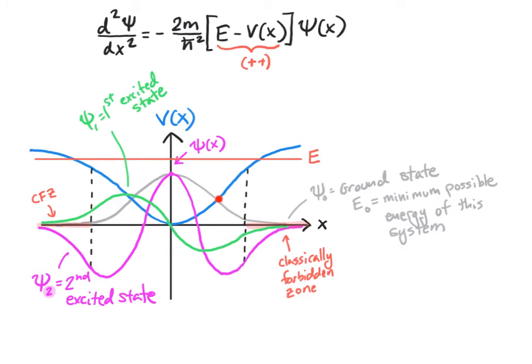Moreover, if the potential function is symmetric, then the ground state will be symmetric, and the second, fourth, sixth, and all even excited states will also be symmetric. The odd excited states — like the first — will be anti-symmetric; they flip from positive to negative. Another useful rule: in the classically allowed regions where there's enough energy to exist classically, the wave function will be wave-like and oscillate. In any classically forbidden region, the wave function will be exponentially decaying toward the x-axis.